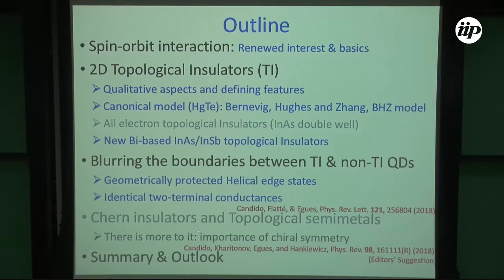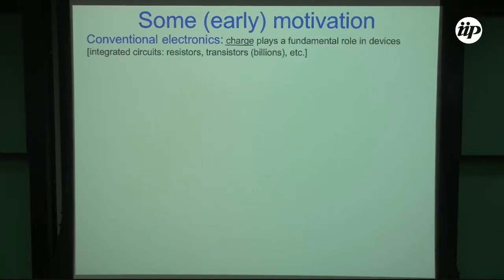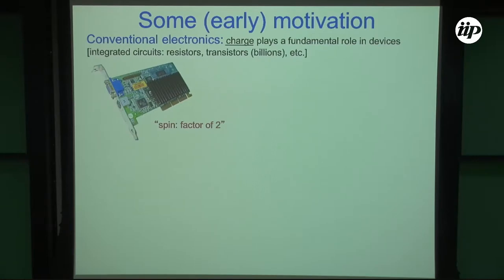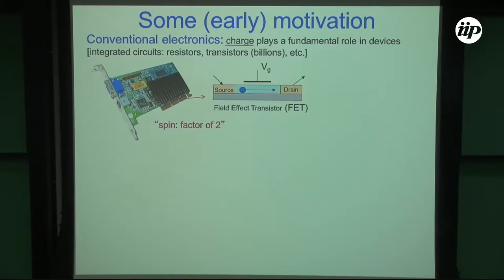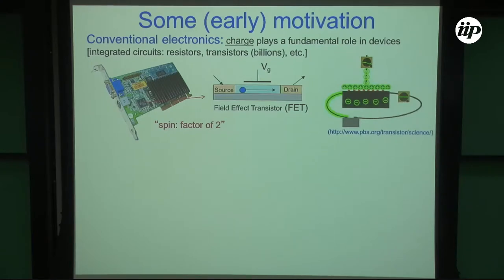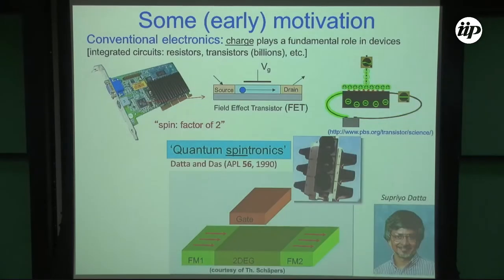I'll also flash a few slides on Chern insulators. This is an old slide I used to show in my talks. It has to do with the spin FET. This is the usual field effect transistor — you have a source and drain, with current flowing between them, and you can control via a gate the flow of charge.